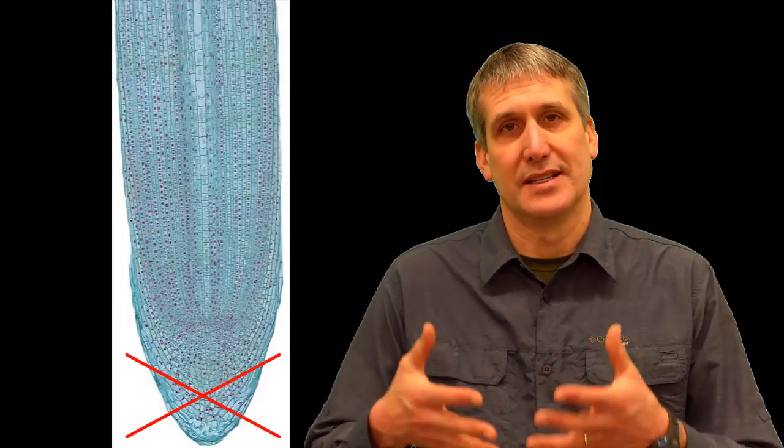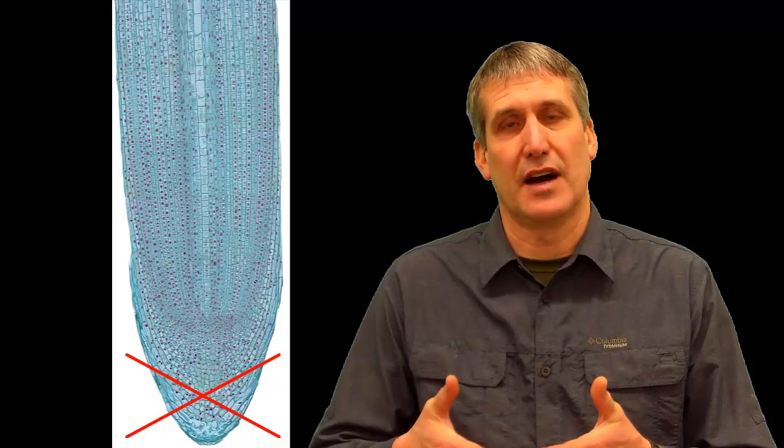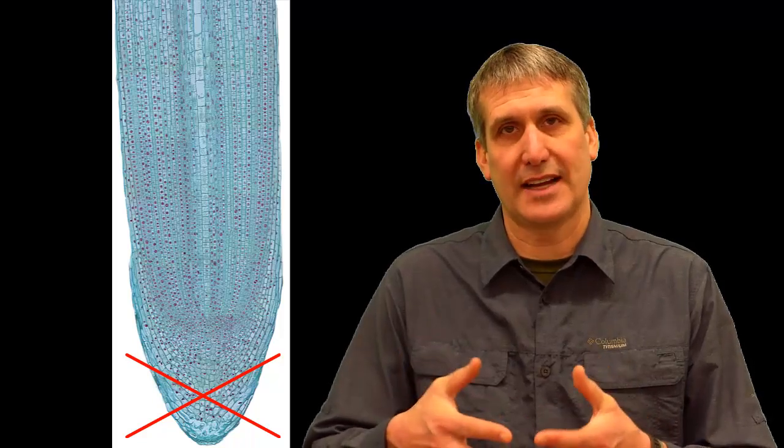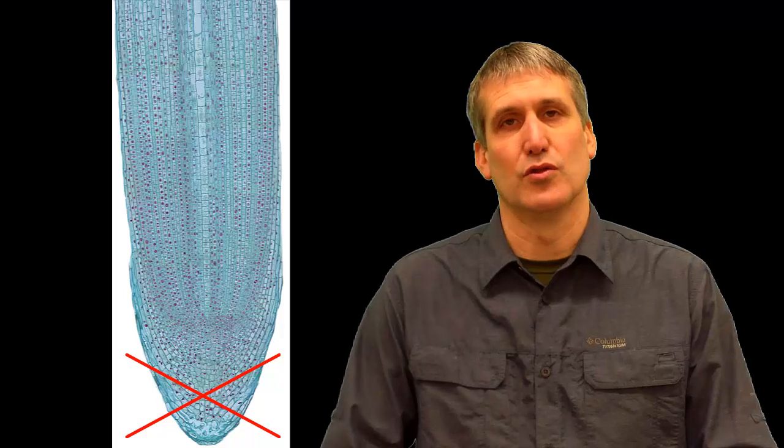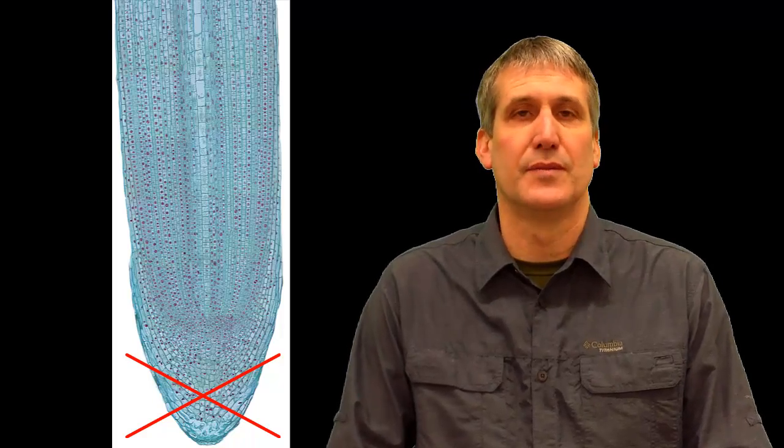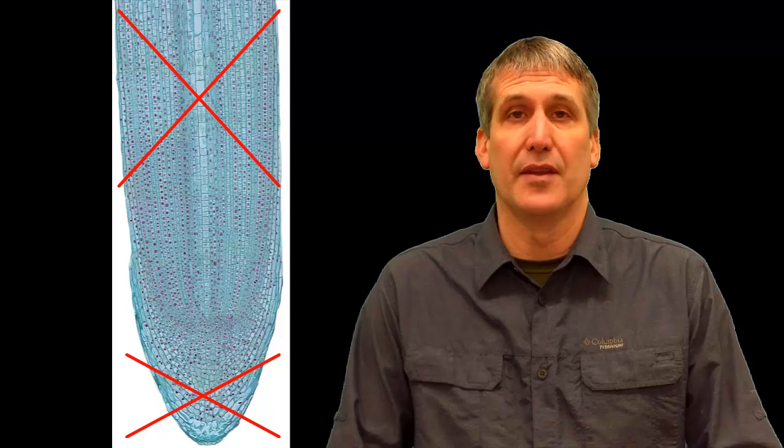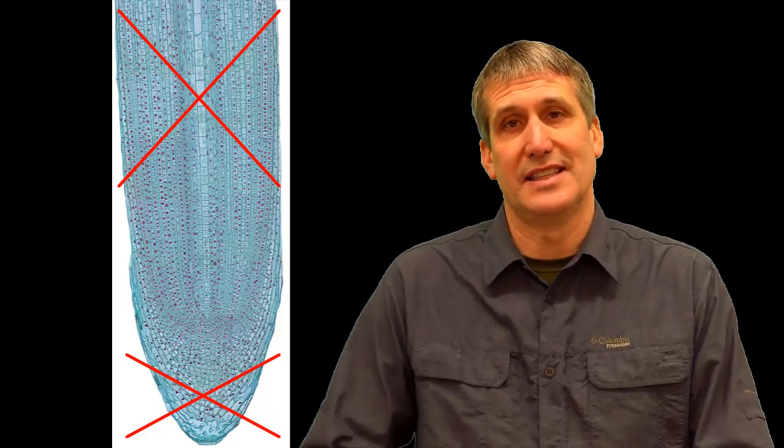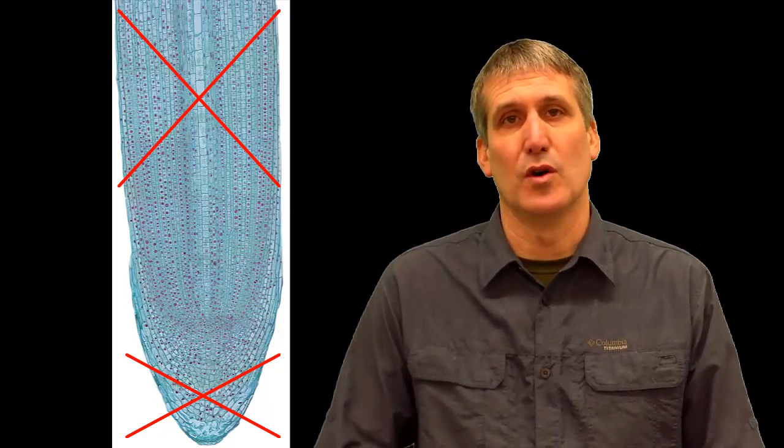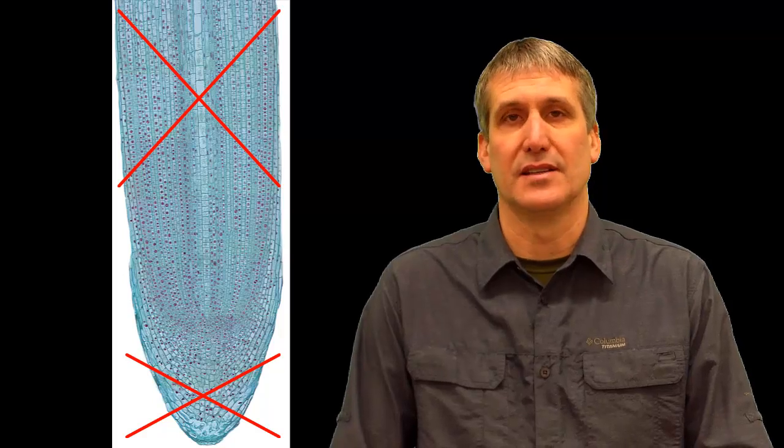You don't want to look at the bottom on the root cap because that is made of cells that don't divide rapidly. That is a protective area that protects the root as it pushes through the soil. You don't want to look too high up on the prepared root tip because that is not the place where most of the cell division is occurring.